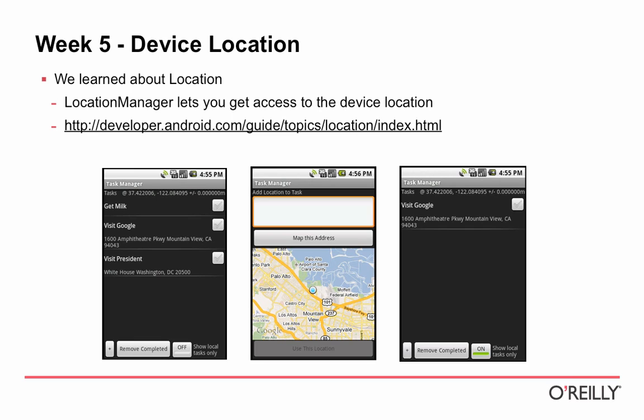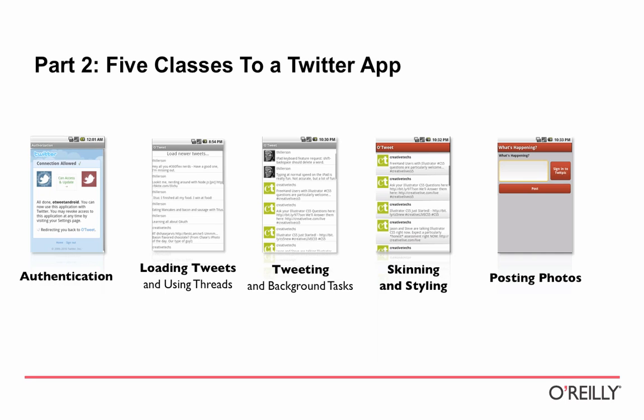In week five, we moved on to finding the actual location of the device and filtering all the tasks the task manager knew about to show only those that were close by, so you could work on finishing a nearby task. That was a solid set of Android SDK features across those five weeks. In this class, we're going to cover a whole other set — it's like filling out more of what we know about the SDK rather than being strictly more advanced.